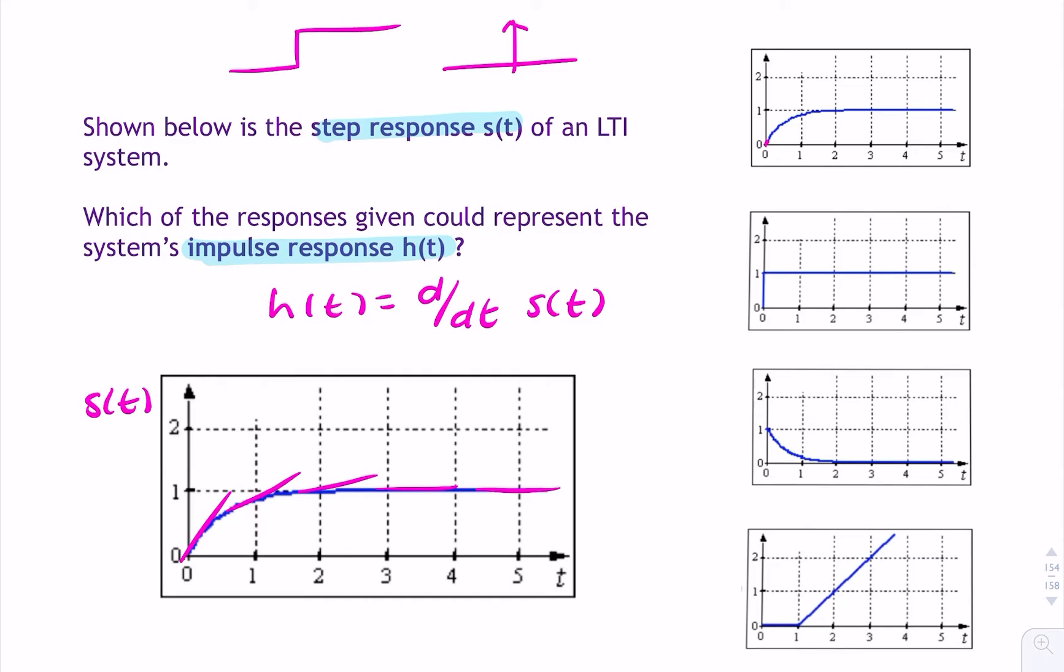So it can't be this because this is going up and then becoming constant at 1. And it can't be this because, again, this is a unit step function. It's constant at 1. It sharply rises, and then it's constant at 1.